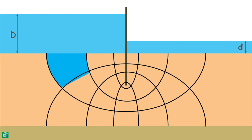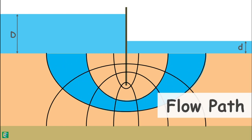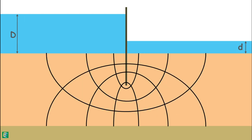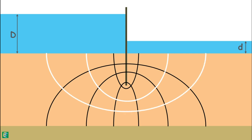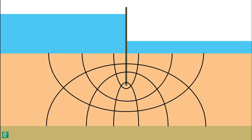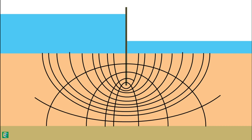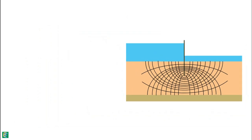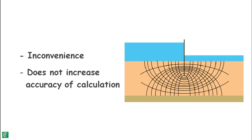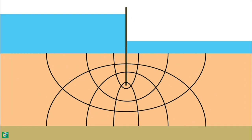The space between two adjacent flow lines is called the flow path or flow channel. The area enclosed between two adjacent flow lines and adjacent equipotential lines is called a flow field. In a flow net, we can draw many possible flow lines and equipotential lines, but drawing too many is inconvenient and does not increase the accuracy of calculations. Only 4 or 5 flow channels are sufficient.